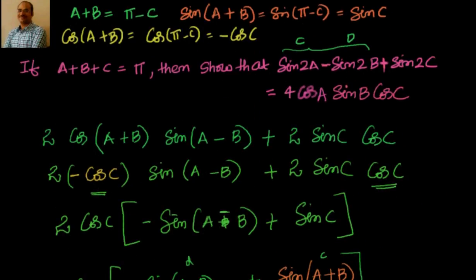So we have now done three examples taking the condition a plus b plus c equals π. We have seen sin2a plus sin2b plus sin2c, sin2a plus sin2b minus sin2c, and sin2a minus sin2b plus sin2c. In the next video we will see how cosine behaves — cos2a plus cos2b plus cos2c, and its variants. We will solve them in the coming videos. Thanks for visiting. Bye for now.